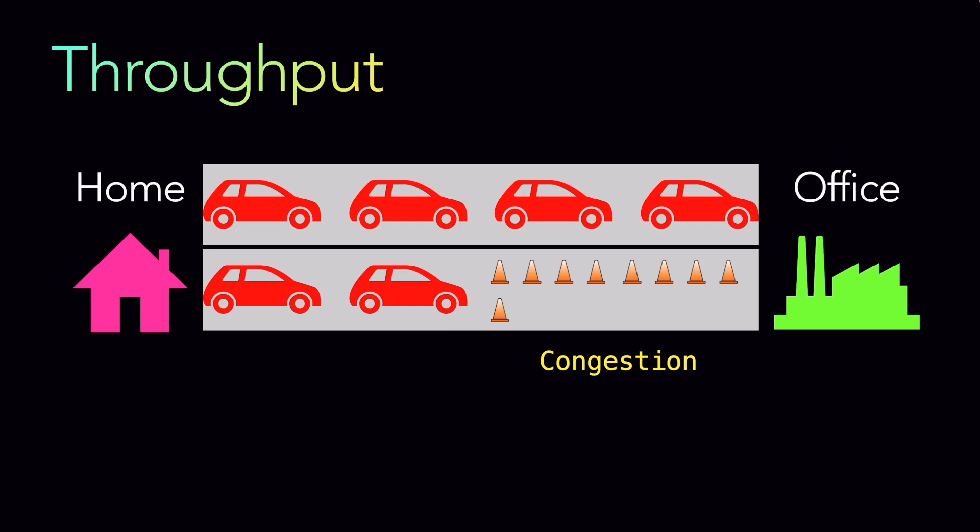So what is throughput? Number of items per unit of time. The item can be, in this case it is car, unit of time can be the amount of time that it is taking. But in the software design world, it's the amount of data that can be sent over a period of time. Now hopefully latency and throughput concepts are clear.